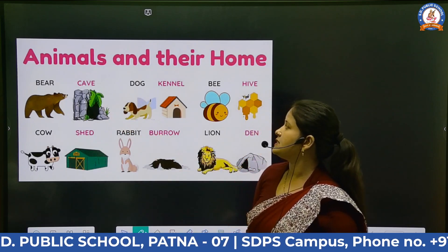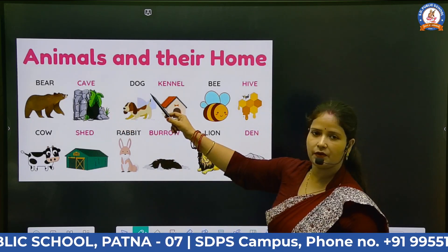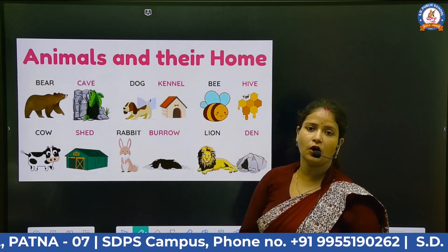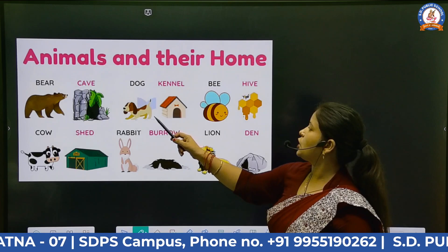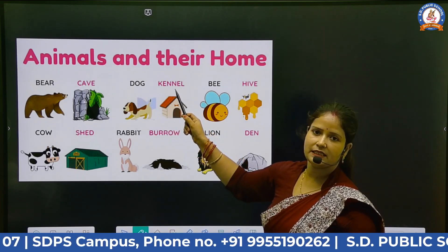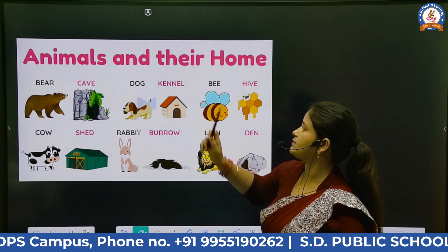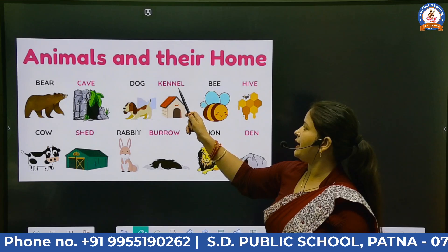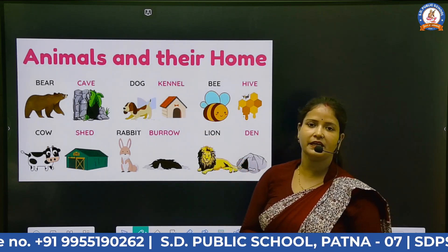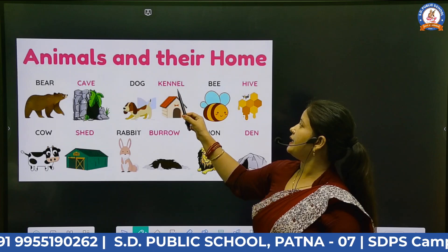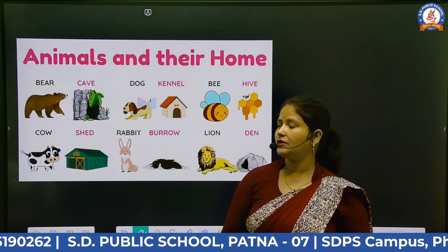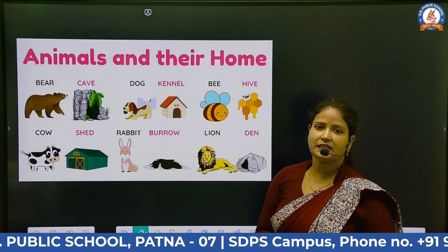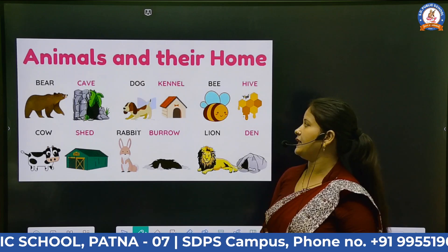Second one is dog. Where does dog live? Dog lives in kennel. It's called kennel. The spelling of kennel is K-E-N-N-E-L. So dog lives in kennel.